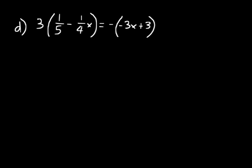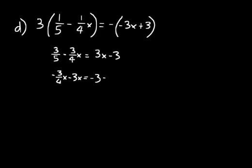On the left, we multiply on the inside by 3. 3 times 1 fifth would just be 3 fifths. 3 times negative 1 fourths, that would be negative 3 fourths x. That's equal to negative times negative 3x is 3x. And then negative times a 3, that's a minus 3. Okay, now let's go ahead and get the x's by themselves. And the way we can do that, let's move the 3x over to the left and the 3 fifths to the right using our change sides, change signs rule. And so we'll have minus 3 fourths x minus 3x is equal to negative 3 minus 3 fifths.